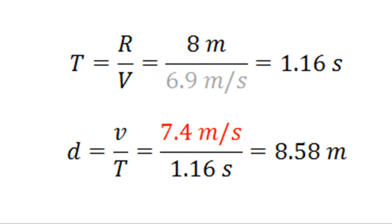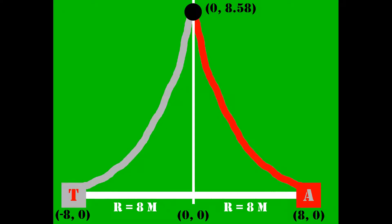Next, to determine how far along our perpendicular line the tackle occurs, we use the formula D equals v times T, where v equals Andrew's speed, and T is the 1.16 seconds we just found. When we solve, we find that Taylor will tackle Andrew 8.58 meters along this perpendicular line.